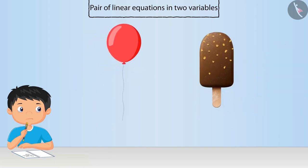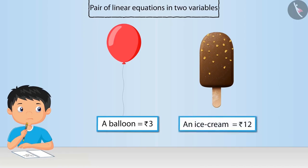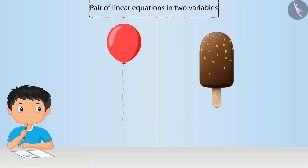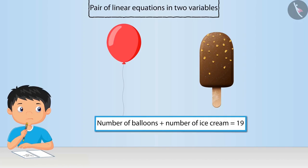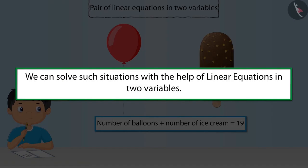But he remembers that a balloon was for 3 rupees and an ice cream was for 12 rupees. And the total number of balloons and ice cream was 19. We can solve such situations with the help of linear equations in two variables which will give us number of ice creams and balloons bought by Rahul. Let's see how.